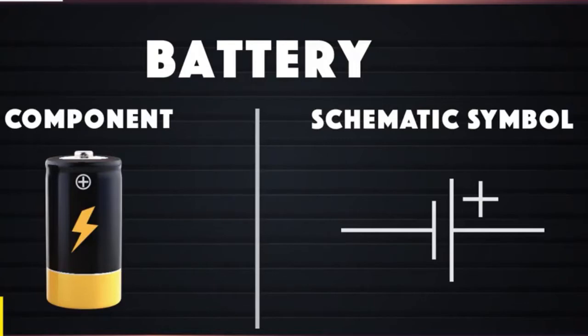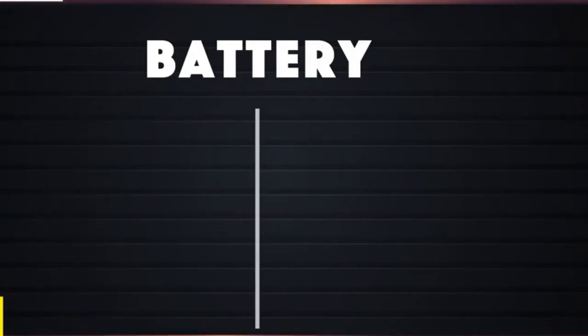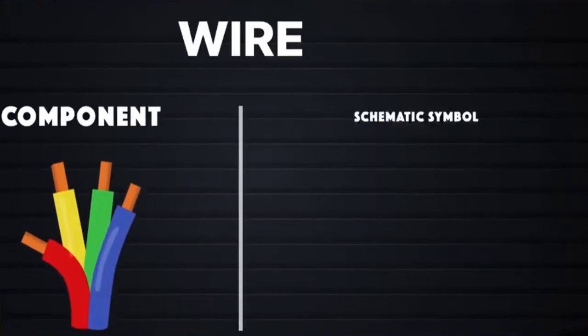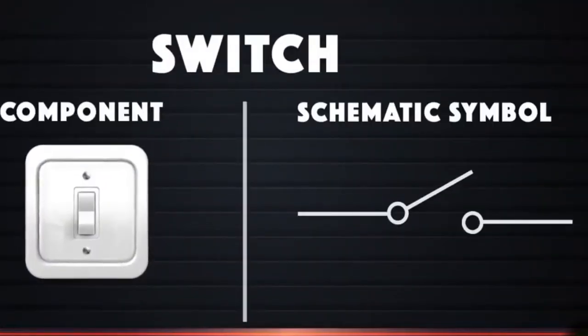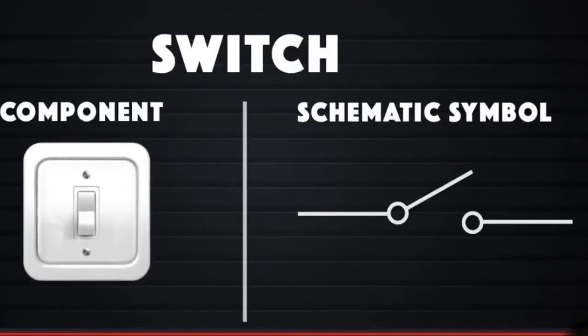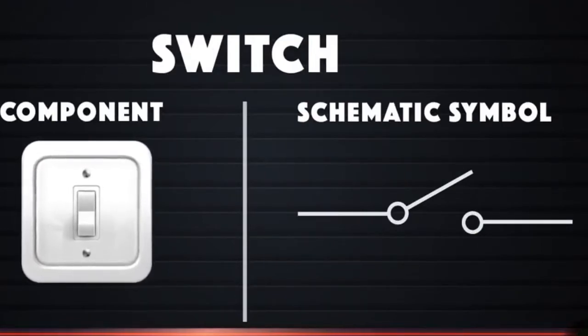or even through a vacuum as in electron or ion beams. A wire is a single, usually cylindrical, flexible strand or rod of metal. Wires are used to bear mechanical loads or electricity and telecommunication signals. A switch is an electrical component that can disconnect or connect the conducting path in an electrical circuit, interrupting the electric current or diverting it from one conductor to another.